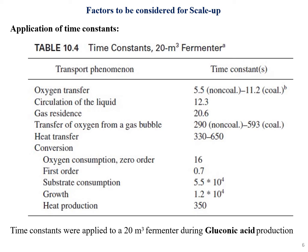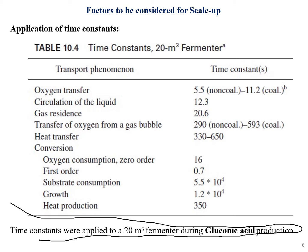Additional time constants cover oxygen transfer and liquid circulation. These time constants were applied to a 20 m³ fermenter during gluconic acid production as a reference example.